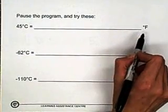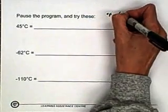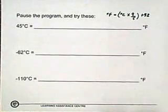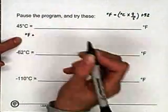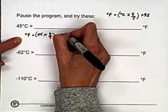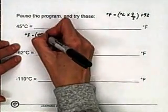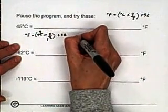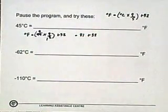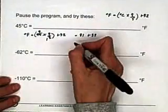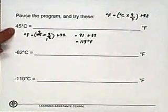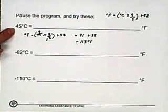To convert Celsius to Fahrenheit, the formula is degrees Fahrenheit equals degrees Celsius times 9 over 5, then add 32. For 45 degrees Celsius: degrees Fahrenheit equals 45 times 9 fifths plus 32. Cancel: 45 divided by 5 is 9, so 9 times 9 is 81, plus 32 is 113 degrees Fahrenheit. 45 degrees Celsius is a hot, hot day — that's what they have in the desert in Arizona in the summer.